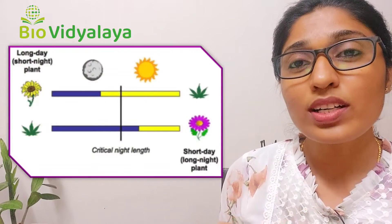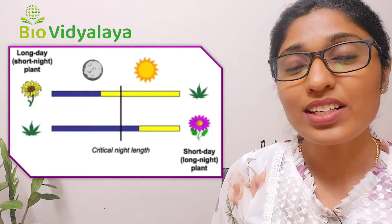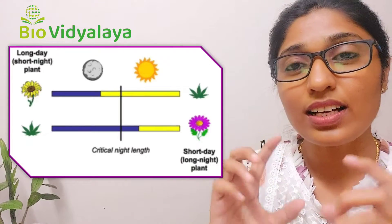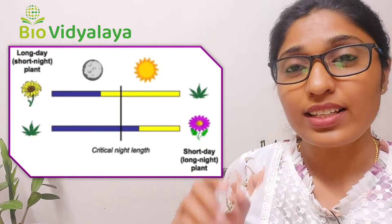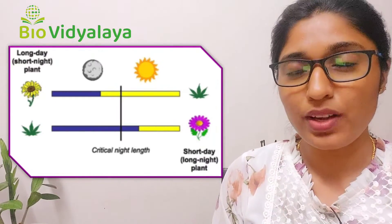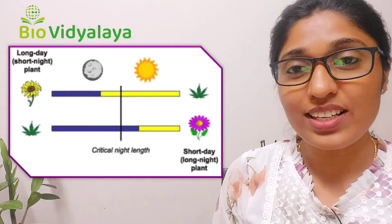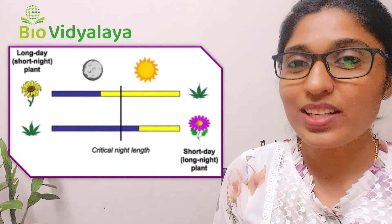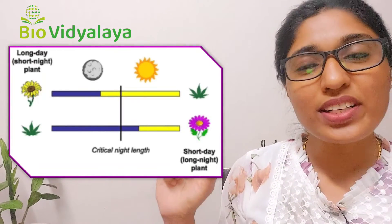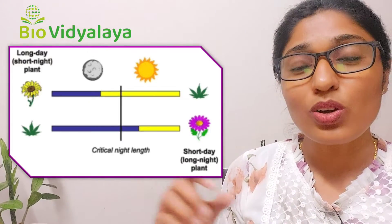Some plants require a long night length for flowering. Such plants are called short day plants — that means the day period should be less than 12 hours for the plant to flower. An example of a short day plant is rice.